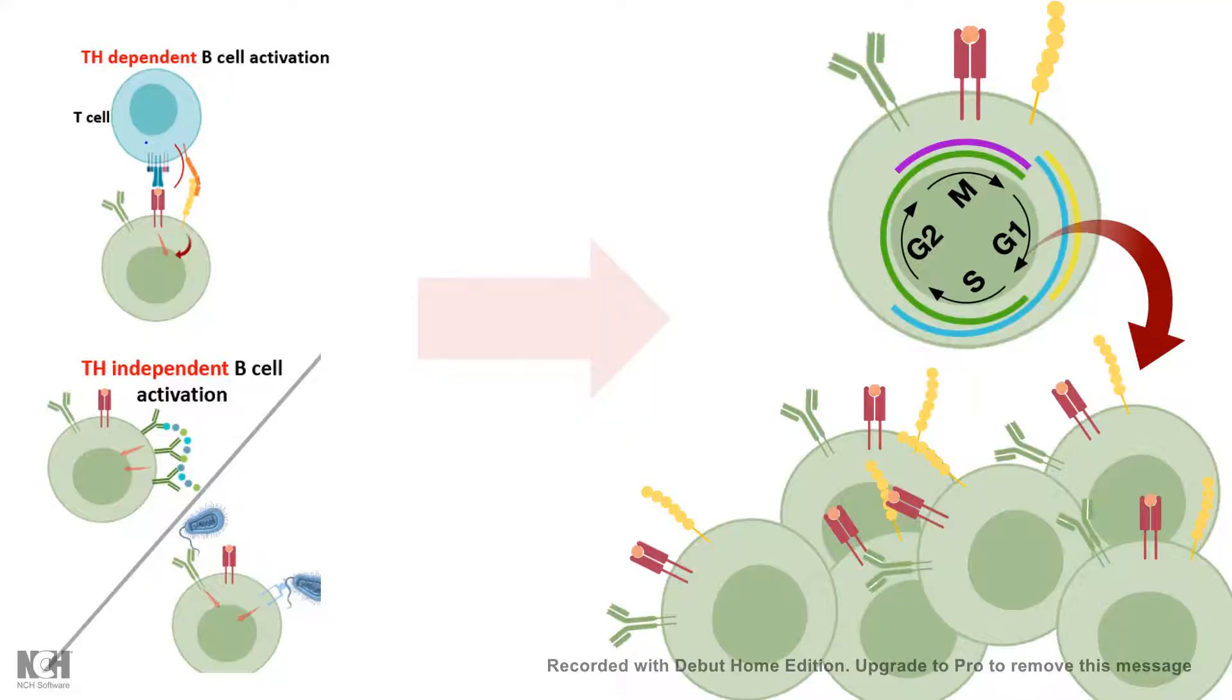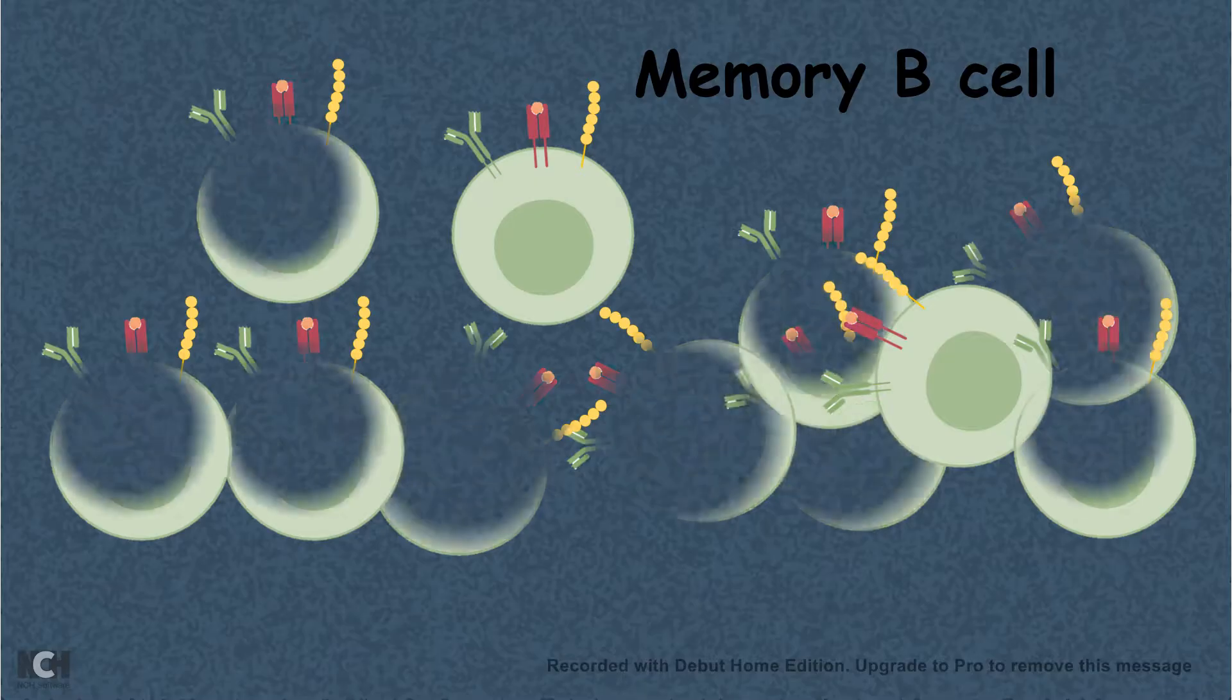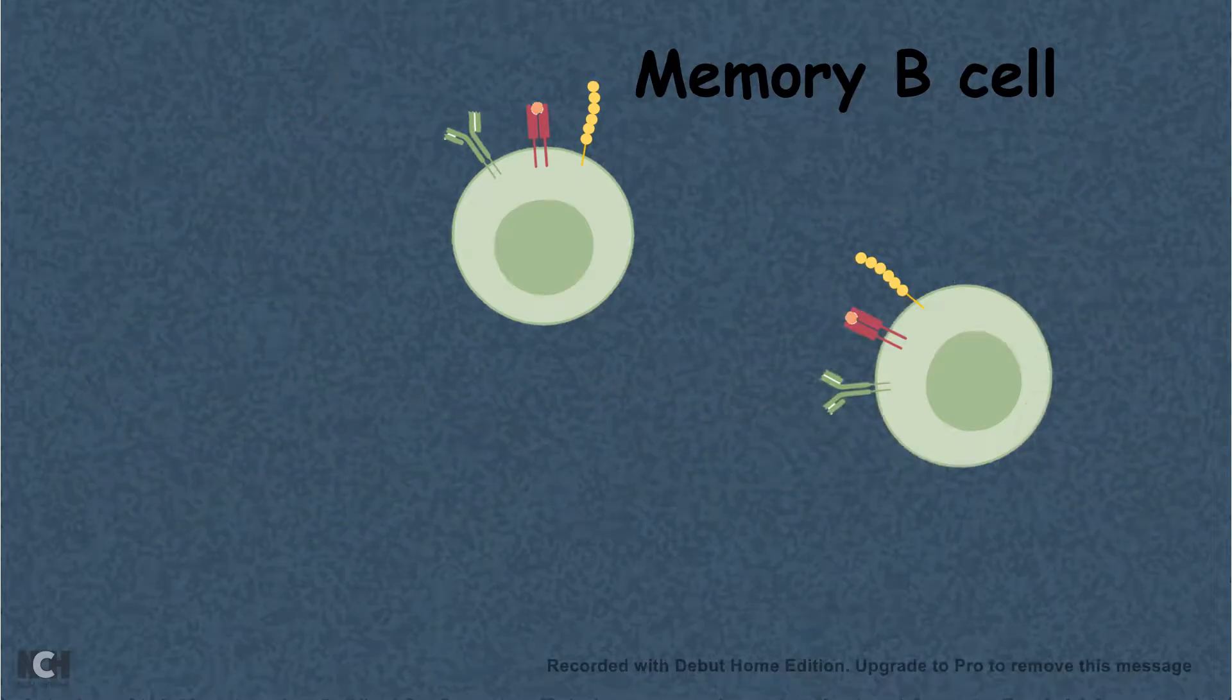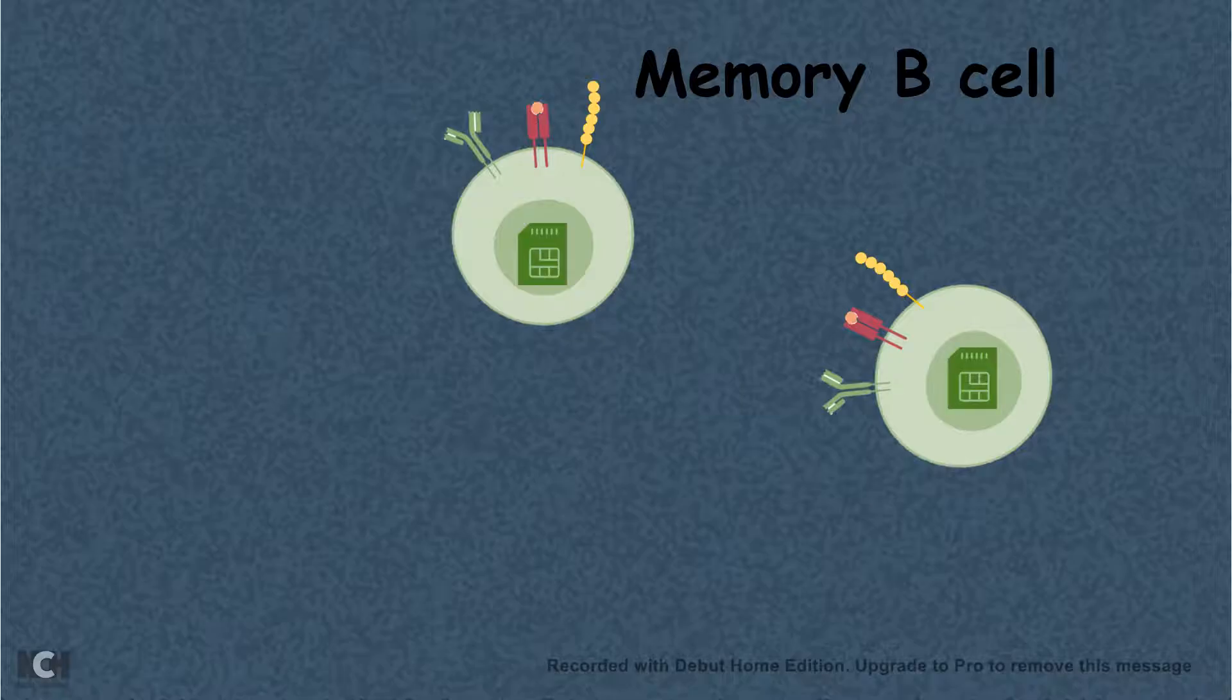Soon after the first exposure is done and the pathogen is neutralized by the antibody, most of them would die and few of them would leave, and they are known as the memory B cell.